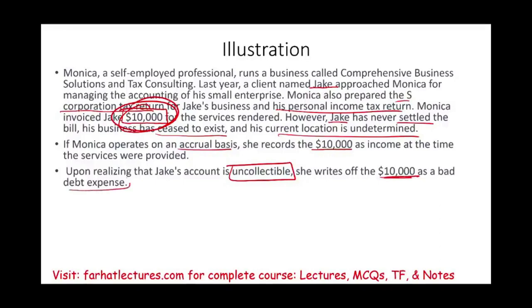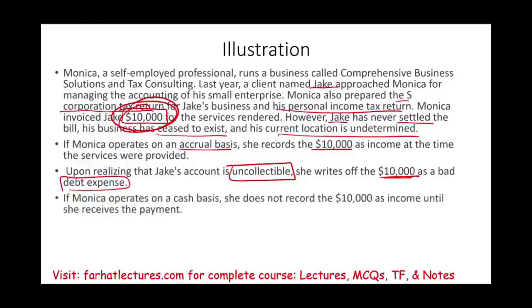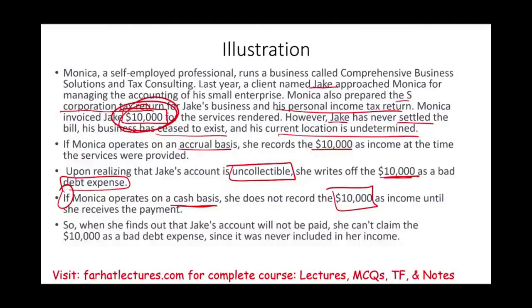Now, if Monica is a cash basis taxpayer, this is a different scenario. She would not have recorded the ten thousand from Jake because she never received it. Therefore, when she finds out that Jake's account will not be paid, she cannot claim a ten thousand dollar bad debt expense, since she never included this ten thousand dollars in income.